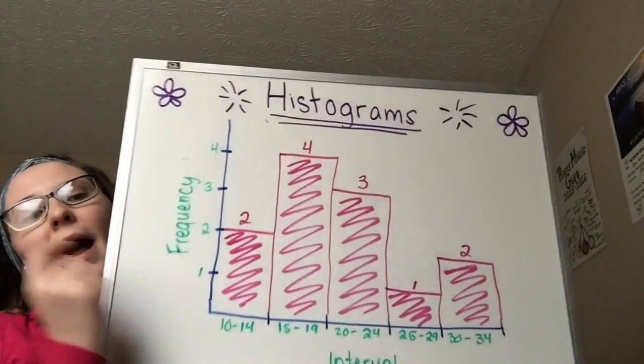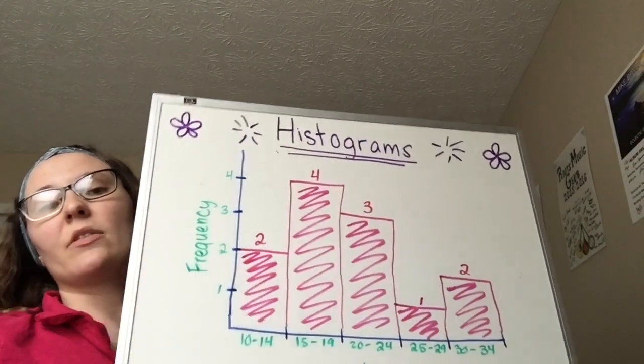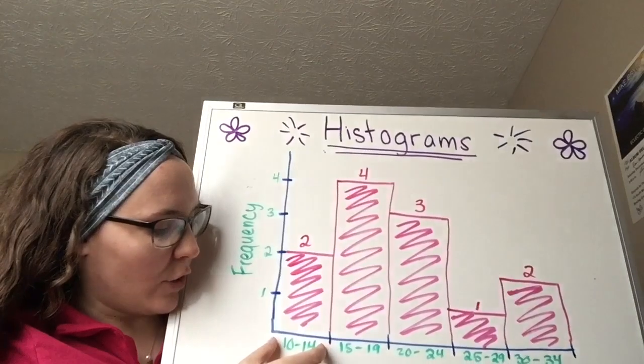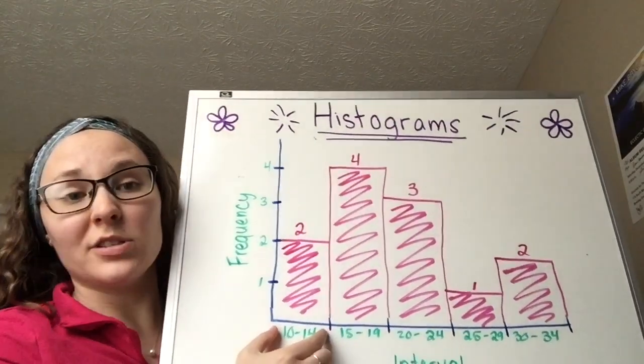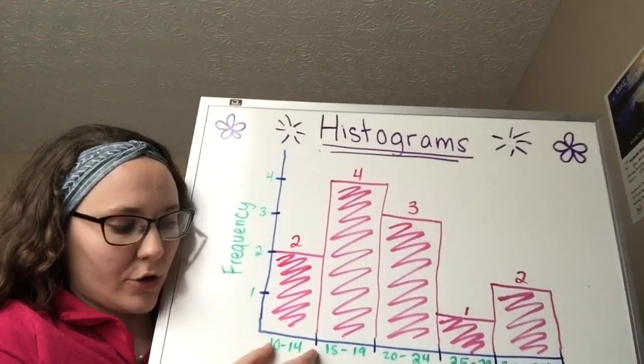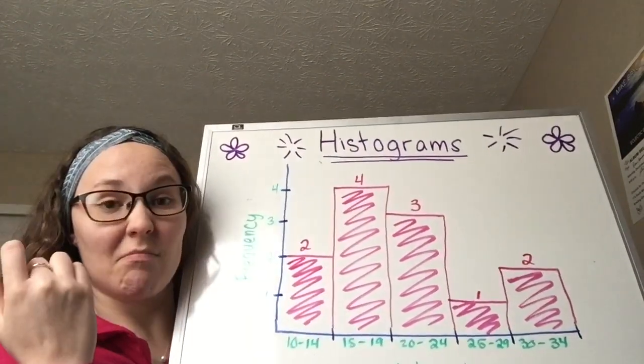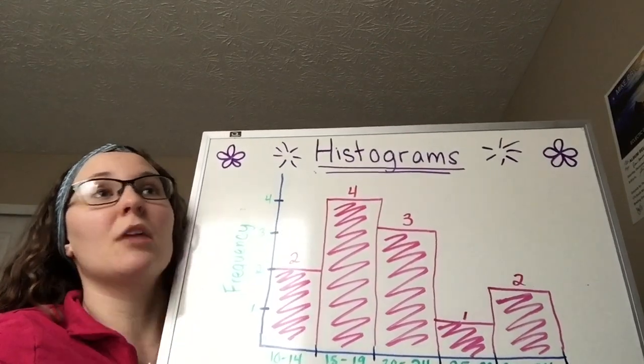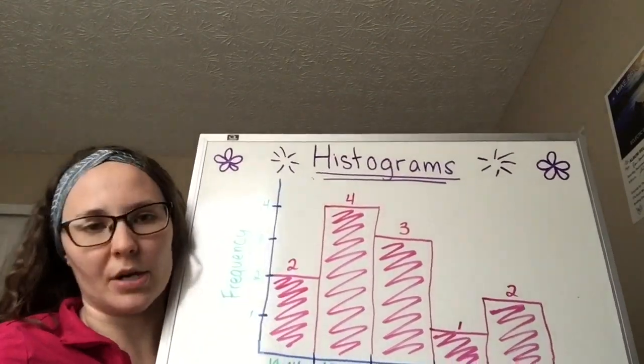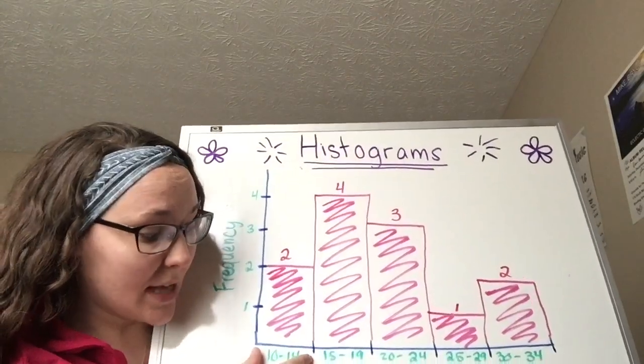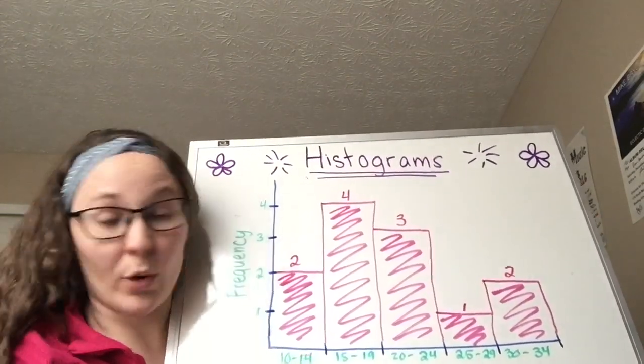When you are just given the graph with no data points, that changes everything! Here, I am given the intervals and I'm given the frequency. But I don't know what numbers are in this interval. To make the frequency of 2, I know there's two numbers that are in this interval, but I don't know if they're 10 and 10. It could be 10 and 14. It could be 10 and 11. It could be a whole skew of numbers. All I know is that there were two numbers that fell within the interval between 10 and 14.